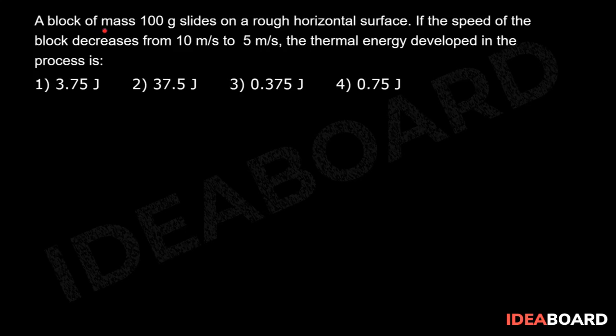A block of mass 100 grams slides on a rough horizontal surface. If the speed of the block decreases from 10 meters per second to 5 meters per second, the thermal energy developed in the process is: